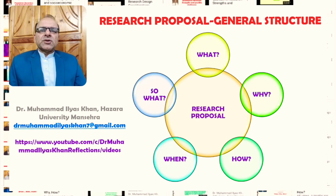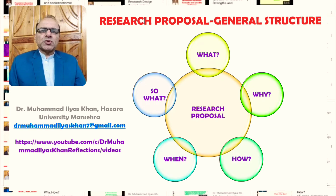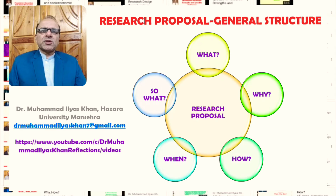Now, generally, the general structure of a research proposal could be thought of in terms of asking these five important questions. The first is the 'what' of the research process — what research is actually taking place, what type of research is taking place. Then the 'why', the 'how', the 'when', and the 'so what' of the research process. These are perhaps the most important questions that are responded to in a research proposal, and the general structure will revolve around these five important questions.